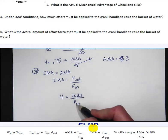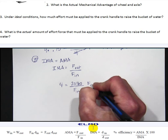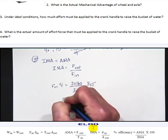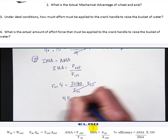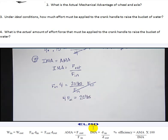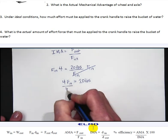And then we're going to find the force in. So to undo dividing by the force in I need to multiply by the force in on both sides.